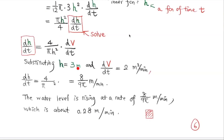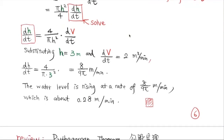We now substitute H = 3 m and dV/dt = 2 m³ per minute. We get dH/dt = 4/(π · 3²) · 2, which simplifies to 8/(9π) meters per minute. To answer the question completely: the water level is rising at a rate of 8/(9π) meters per minute, which is approximately 0.28 meters per minute.